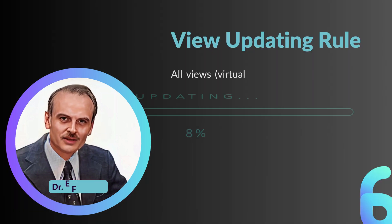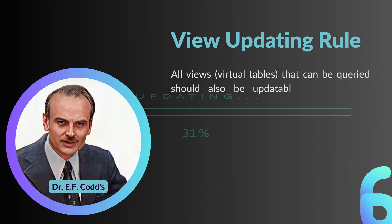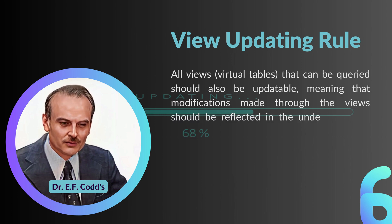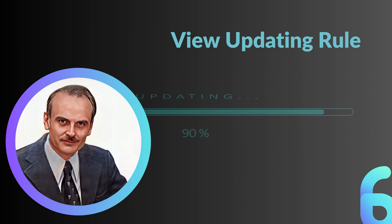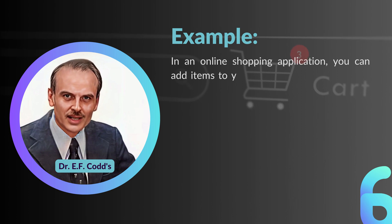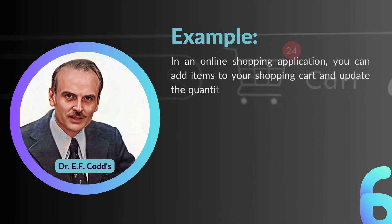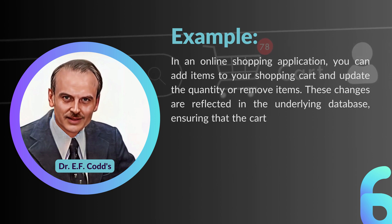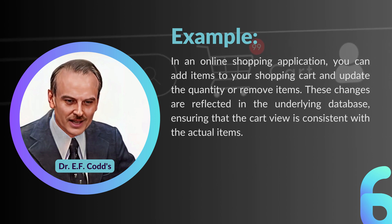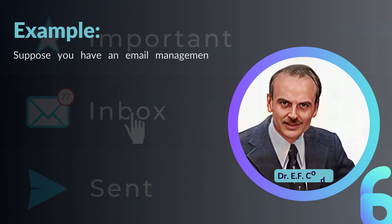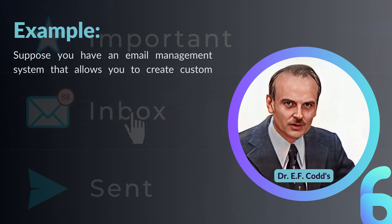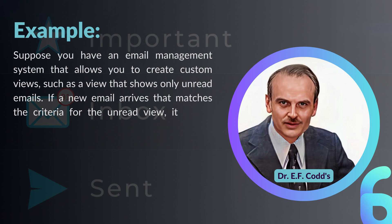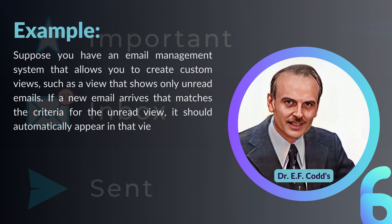Rule number six: the View Updating Rule. All views, or virtual tables, that can be queried should also be updatable, meaning that modifications made through the views should be reflected in the underlying base tables. In an online shopping application, you can add items to your cart and update the quantity or remove items, and these changes reflect in the underlying database. Similarly, in an email system with a custom 'unread emails' view, a new matching email should automatically appear in that view.